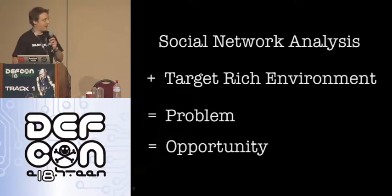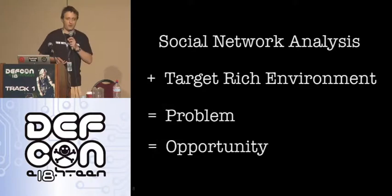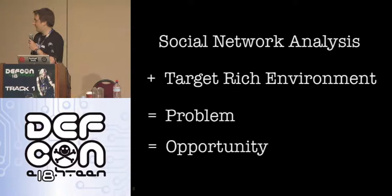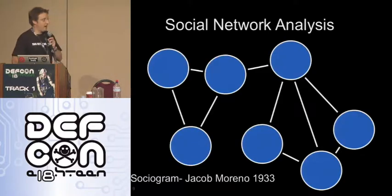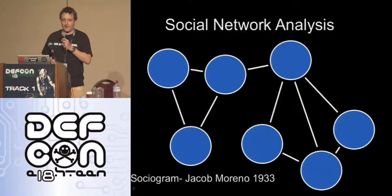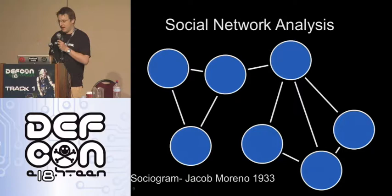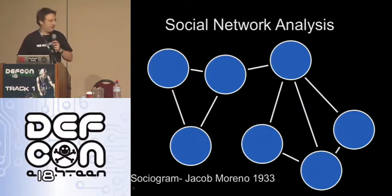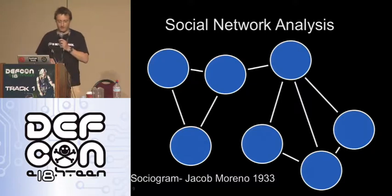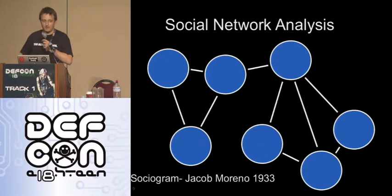Social network analysis — target-rich environment equals a problem or an opportunity, depending on how you're viewing it. This dude here, Jacob Moreno, is credited with being the grandfather of social network analysis, and that sort of graph first appeared in the New York Times in 1933, around the gestalt psychology movement. You can date this stuff back to the Greeks, but they didn't have the same computing power we've got, so they were largely limited.